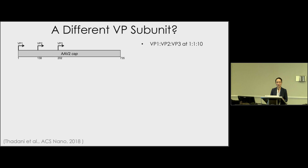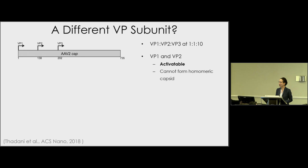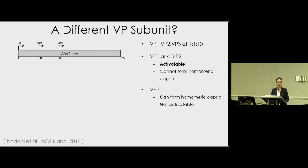Since the initial report, we've thought more deeply about this functionality and how we could push it. We realized that VP1 and VP2, the subunits with this activatable function, cannot form homoameric capsids — you can't make an AAV capsid that is entirely VP1 or entirely VP2. However, the VP3 subunit, the shortest, can form homoameric capsids. But to our knowledge, VP3 does not undergo this activatable switching.